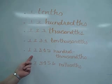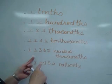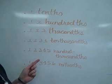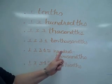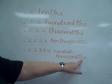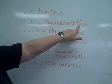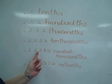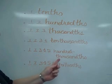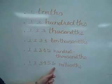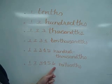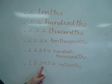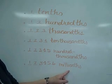Five places — and this is getting to a point that not many people use these many places, though there would be some fields that require it. Five places is going to be hundred-thousandths. Notice that it does have the 'th' — that always tells you you're at the small end. This would be 12,345 hundred-thousandths. Six places, and that's as far as we'll go — six places is millionths. So this is going to be 123,456 millionths.